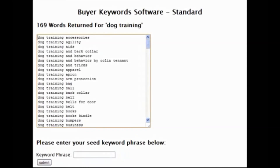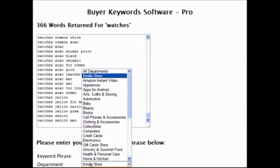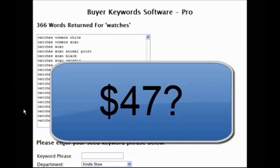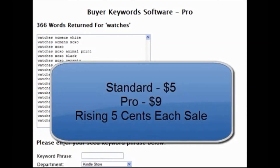To summarize: the standard version goes one level deep and searches all departments. The pro version lets you choose the department and go up to eight levels deep — though in reality I'd advise not going over two levels. There are a couple of similar tools out there sold for up to $47. The standard version starts at just $5, rising by five cents per sale, and the pro version starts at $9, also rising by five cents per sale.